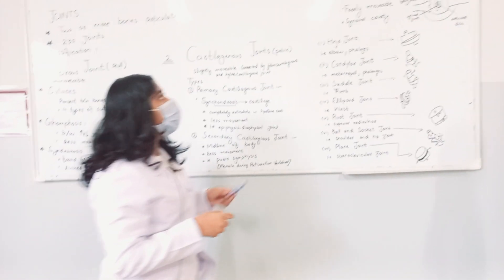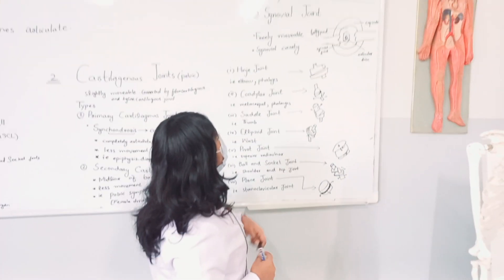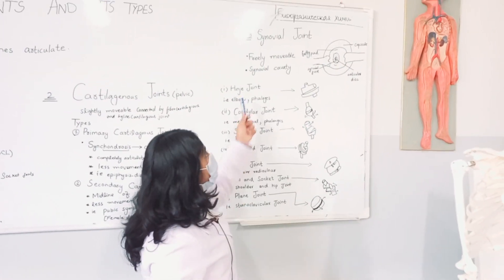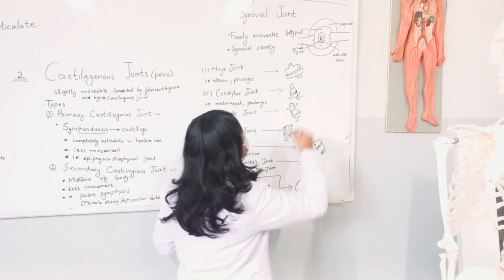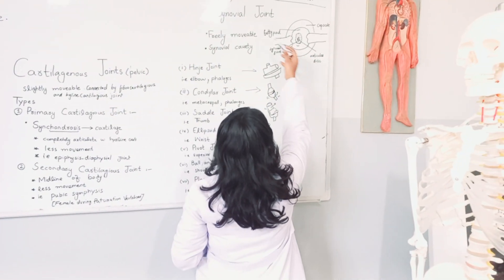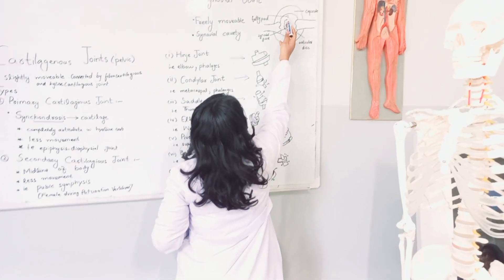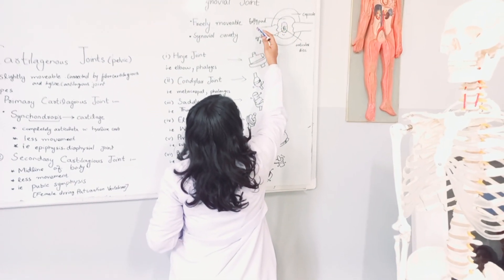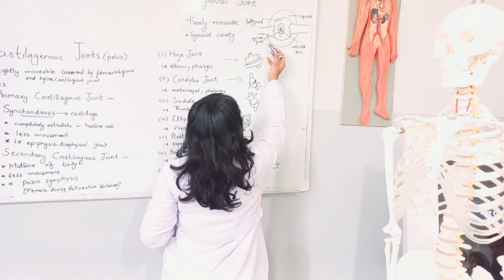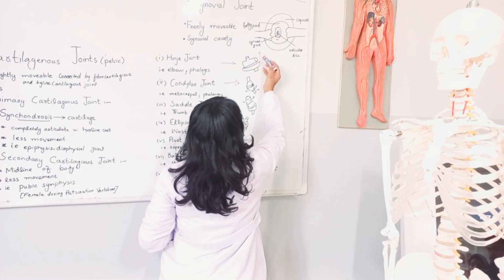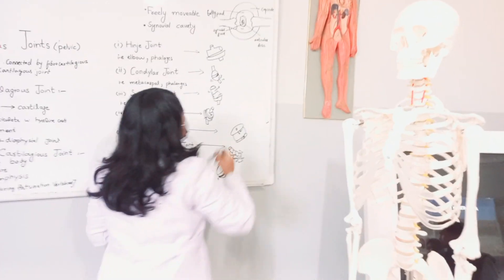Now we will look at the synovial joint. It is a freely movable joint and a synovial cavity is formed. This is the diagram of a synovial joint, showing the fatty pad, the capsule, and the articular disc.